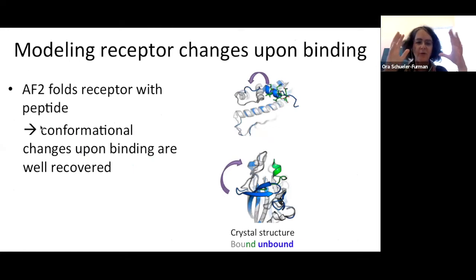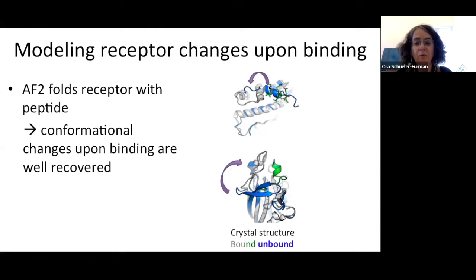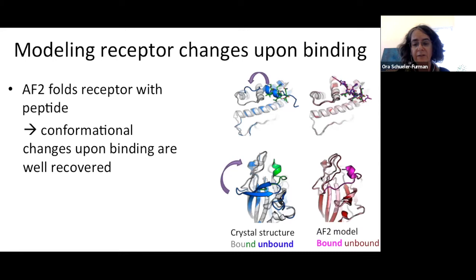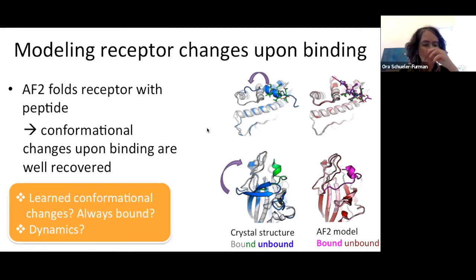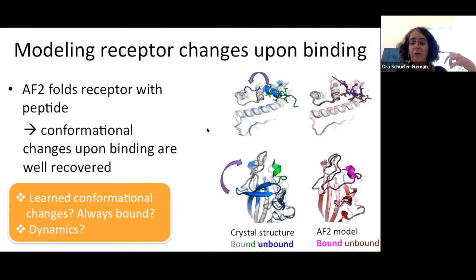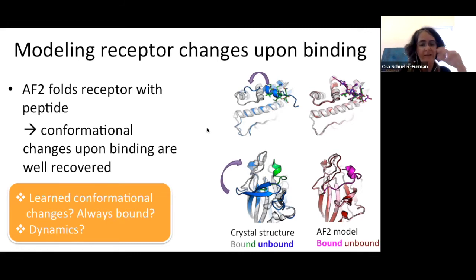Another exciting finding is that AlphaFold can model conformational changes — cases we couldn't address without co-folding. In two examples, the blue is the unbound conformation and green is the bound conformation. In the bound conformation, the peptide occupies a site that overlaps with part of the protein, and a beta-hairpin moves — and AlphaFold models both cases very nicely. Questions remain: did it learn these conformational changes? Does it always predict the bound conformation? Can we use this for dynamics?